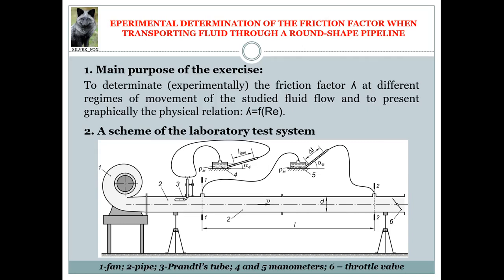Manometer 4 is a required mandatory component connected to the Prandtl tube. The velocity is obtained by measuring the dynamic pressure of the fluid flow, presented as the difference between the total and static pressure at its both ends. Manometer 5 aims to measure the pressure drop between the two ends of the studied pipe section — between sections 1-1 and 2-2. This section represents a straight pipe where there is no local resistance, the so-called minor energy loss, so the measured pressure drop is a result of friction only.